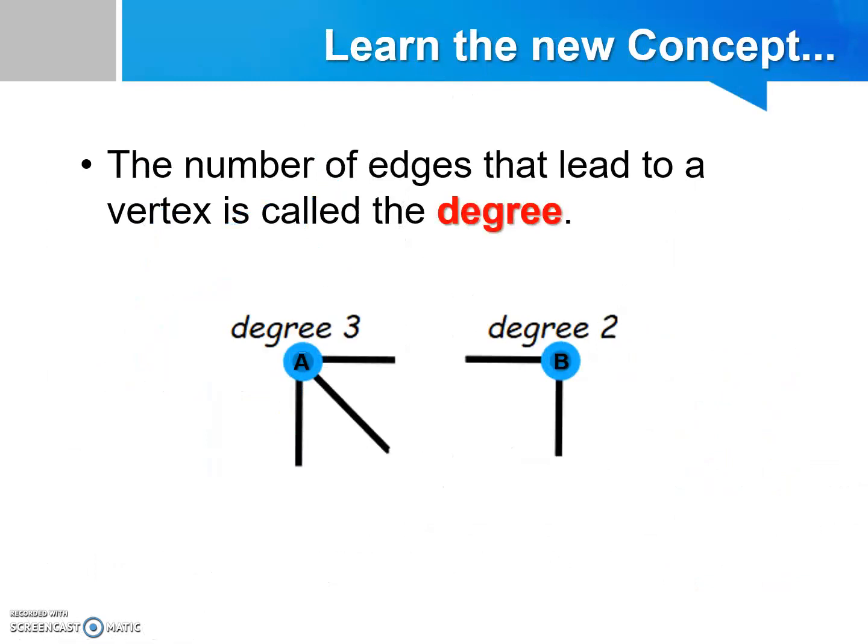Other than that, the number of edges that lead to a vertex is called the degree. For example, there are vertex A and vertex B here. Vertex A has degree of 3, as there are 3 edges leading to the vertex. So we can call it an odd degree because 3 is an odd number.